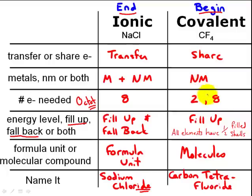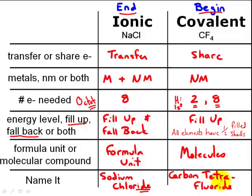In covalent compounds, it's not about transferring electrons — it's all about sharing. In a sharing relationship, both parties have equal ownership over what they're sharing, which was not the case with ionic compounds. Covalent compounds are all made of non-metals. The octet rule is still in effect, but there's also a duet rule, because hydrogen has one electron in its outer shell and only needs one more to have a full first energy level — two electrons. We call covalent groups of atoms molecules, and we name them with prefixes such as di-, tri-, tetra-, as in carbon tetrafluoride or carbon dioxide.